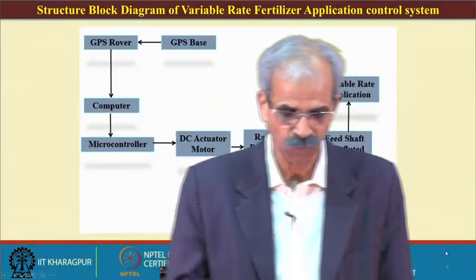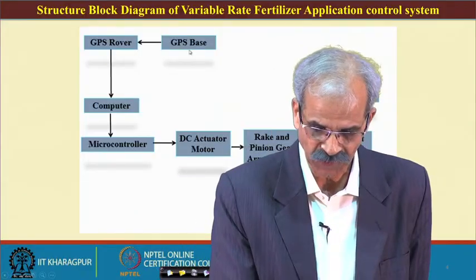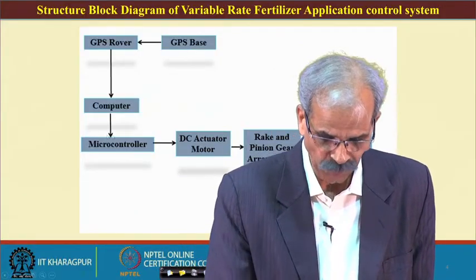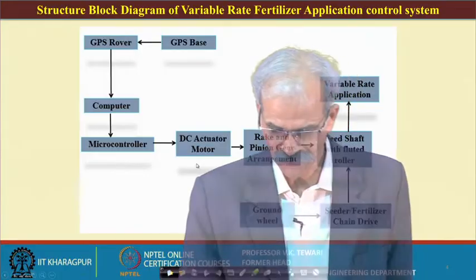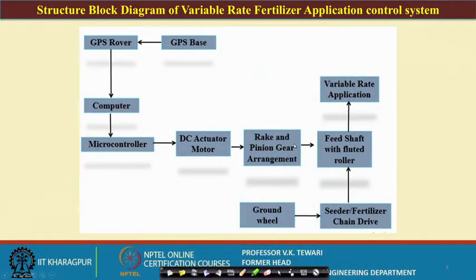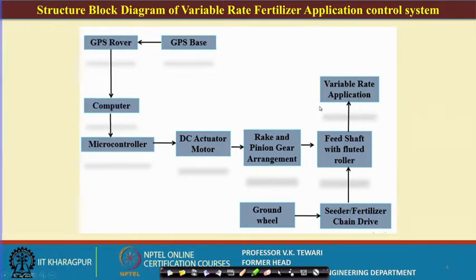Regarding the block structure of the system: you have a GPS, then a computer, then a microcontroller, then a DC motor, a rack-and-pinion arrangement, then the feed shaft with variable rate application, then a chain drive, and then the ground wheel. From the ground wheel you get the drive, and the information flows through for variable application.